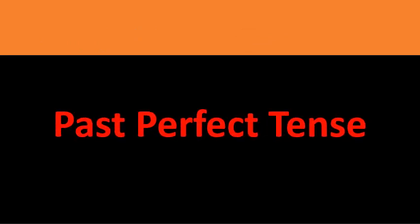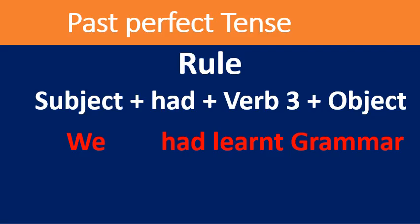Now I take you to past perfect tense. Past perfect refers to a time earlier than before now. It is used to make it clear that one event happened before another in the past — it does not matter which event is mentioned first; the tense makes it clear which one happened first. The rule is: subject + had + verb in the third form + object. We use 'had' irrespective of the singularity or plurality of the subject.